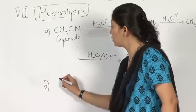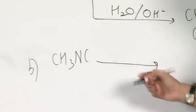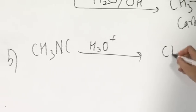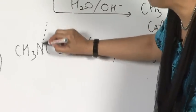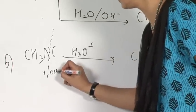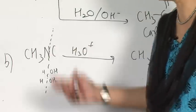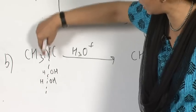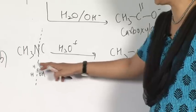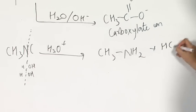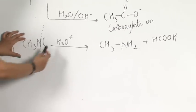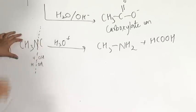Now, what happens if I take an isocyanide? Isocyanide, whether under acid or basic hydrolysis, reacts with two molecules of water. Placing H and OH from both water molecules, you get CH3NH2 (a primary amine) plus formic acid. Any isocyanide on acid hydrolysis always gives that carbon atom as formic acid.